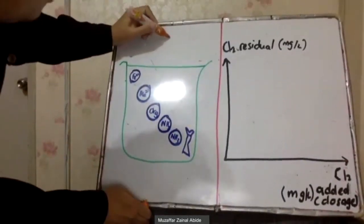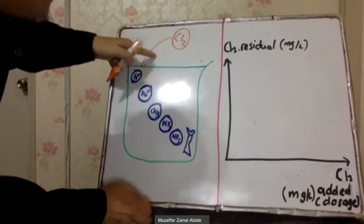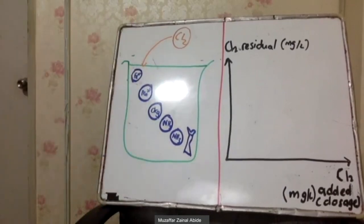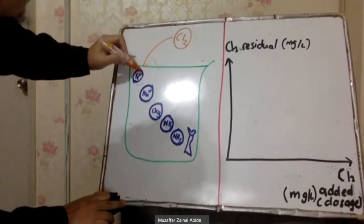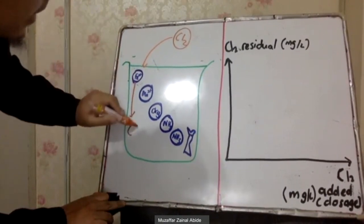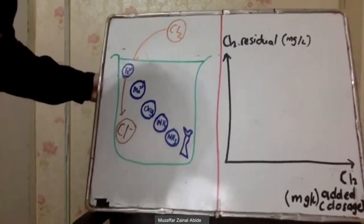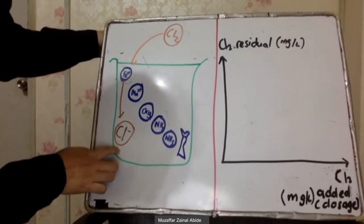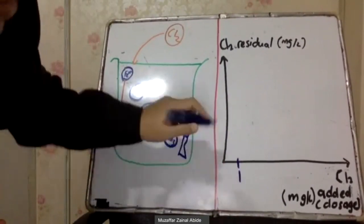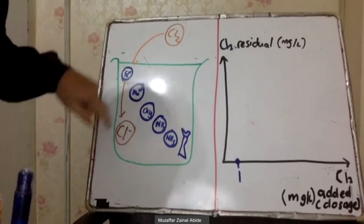Let's say you add the first dose of chlorine into the water. Instead of forming free chlorine or combined chlorine, the first thing it does is oxidize the iron that is present, and it becomes a chloride ion (Cl⁻). As you know, chloride ion is not free chlorine, so it does not disinfect. We have already added one dose of chlorine but there is zero chlorine residual.